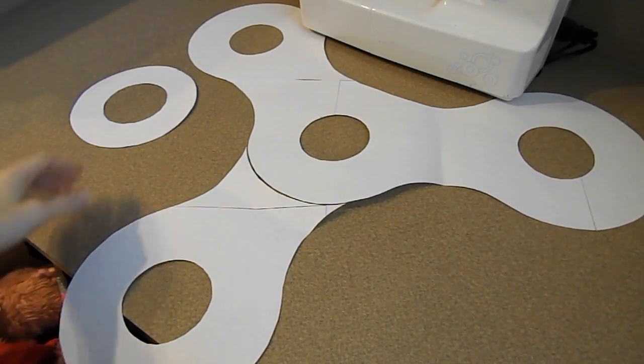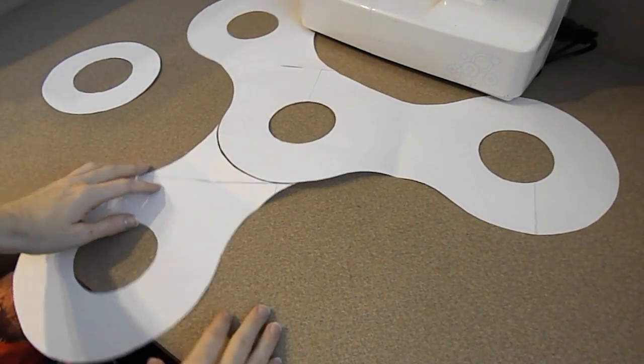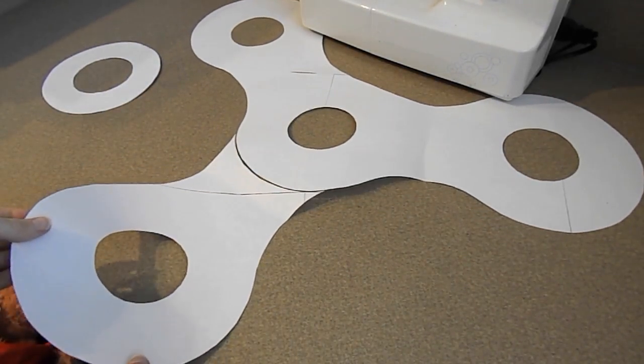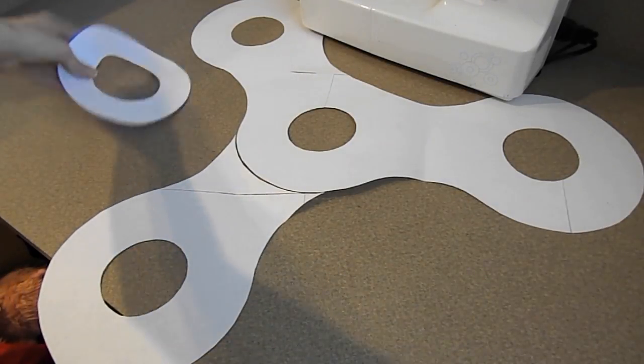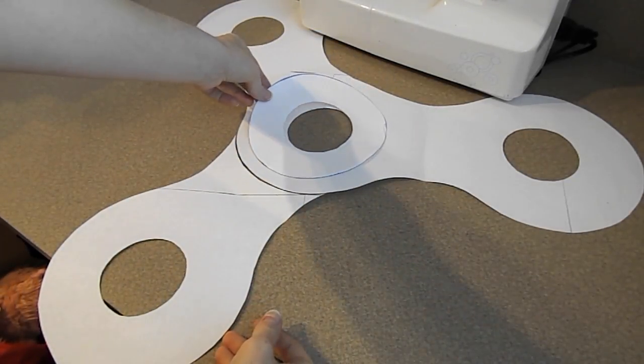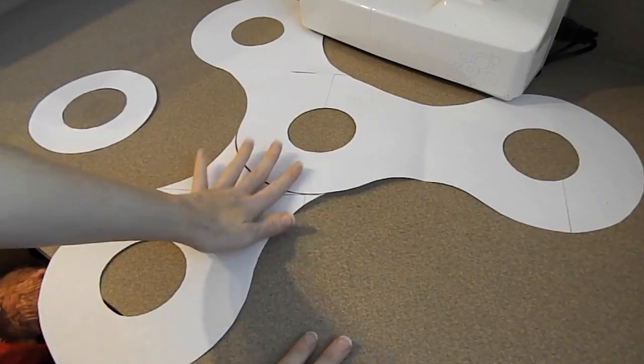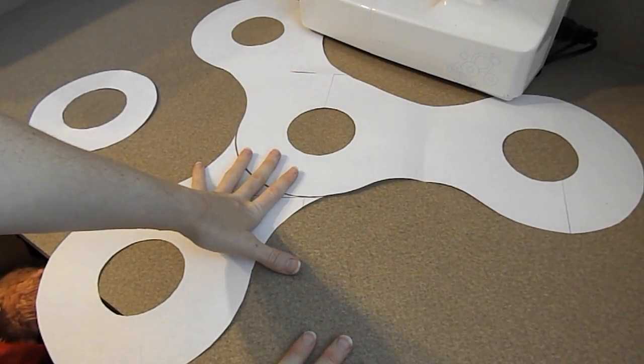This is the pattern for our spinner. I drew this out using a couple round things around my kitchen like plates, cups, whatever I could find that would work for the circles that I needed. I laid them out on the paper, traced them, and connected them to make the spinner shape.